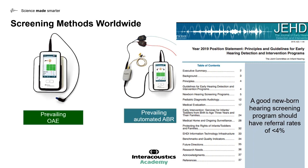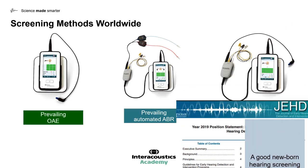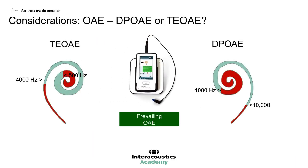We can look at the referral rates associated with each method to gain greater insights into how these perform in the real world. A commonly asked question is which OAE type is best: transient evoked otoacoustic emissions or distortion product otoacoustic emissions. The images below show the frequency range where each OAE is optimum. Transient evoked OAEs perform better in the low frequencies, whereas distortion product OAEs perform better in the higher frequencies. When it comes to newborn hearing screening, the frequencies tested are typically between 1 and 5 kilohertz, and both methods are robust in measuring this frequency range.